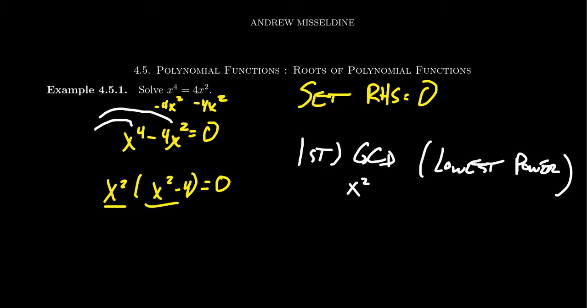We've taken out the GCD. We then want to factor x squared minus 4. We have to remember the previous factorization formulas. In particular, x squared minus 4, that's a difference of squares. We can factor that one as x minus 2 and x plus 2 equals 0.